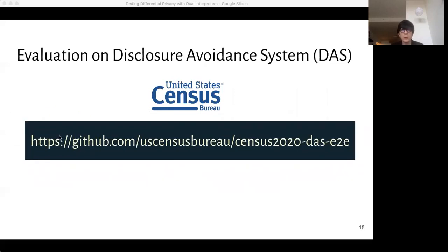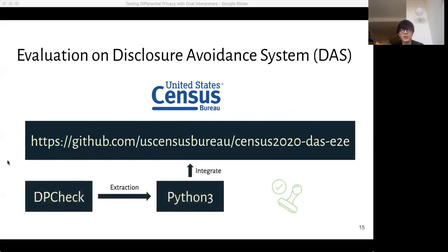We also wanted to see if our framework can be used to help develop real-world software. So we performed a case study on the Disclosure Avoidance System, DAS, which was used by the Census Bureau to aggregate population counts in the 2020 Census. We looked at the source code of DAS and re-implemented the core privacy mechanism of DAS in the language accepted by our testing framework, and we checked that no violations of differential privacy were detected. We also used the code extraction feature of DPCheck to convert this re-implemented core privacy mechanism back into Python 3, and then we integrated the extracted code with the rest of DAS. We then ran a lot of statistical tests to make sure both versions of DAS behave identically as a sanity check.